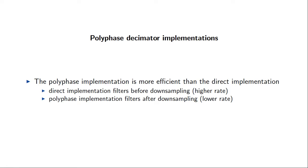The reason for implementing a filter as a polyphase decimator is that it's more efficient than the direct implementation. In the polyphase filter, these filters P are implemented after we do the downsampling. In the original approach, we apply filter H before downsampling — at the higher rate signal — which is computationally inefficient. In the polyphase implementation, we first downsample, then apply the filters in the lower rate domain, where we don't need as many computations per unit time. This leads overall to a more efficient implementation.